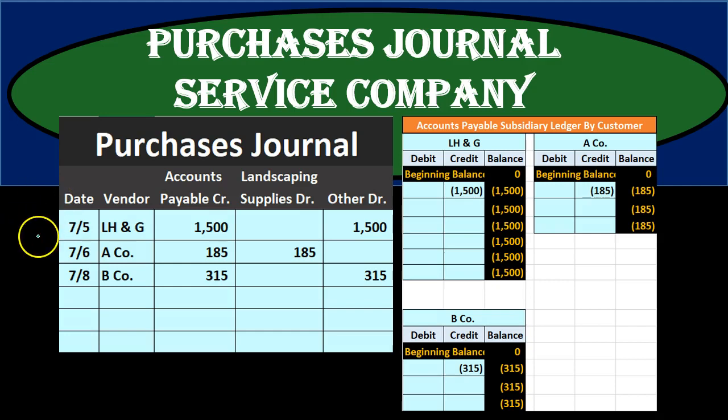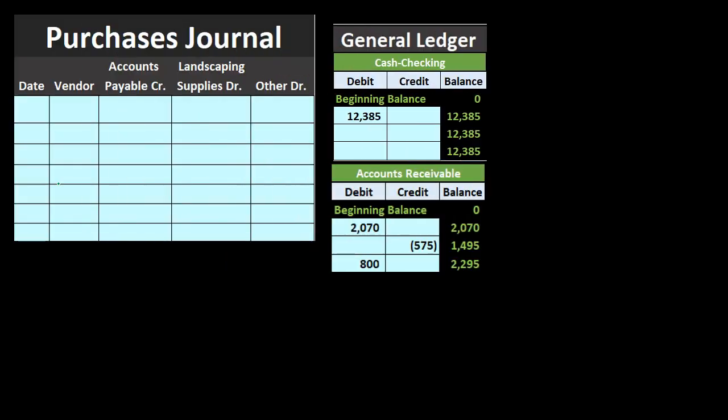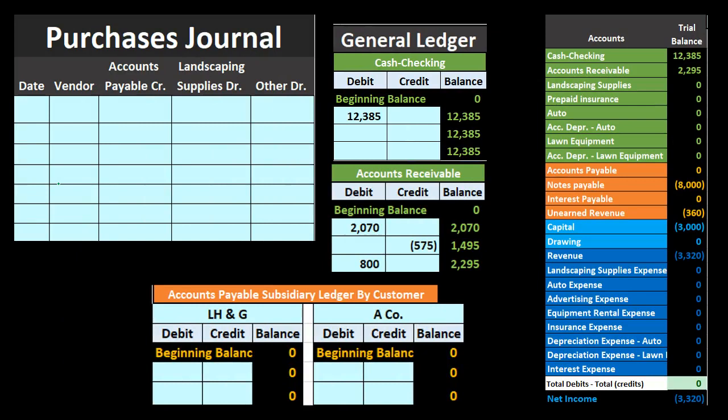With the purchases journal, we record transactions during the month into the journal rather than making a separate journal entry for each transaction, making the process quicker. At the end of the month — or whatever the time period — we sum these up and then record that as a journal entry into the normal general journal.